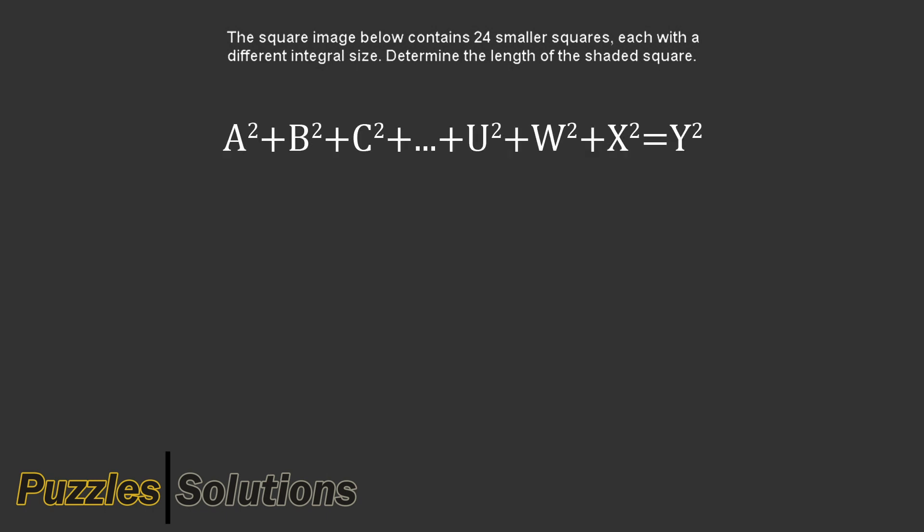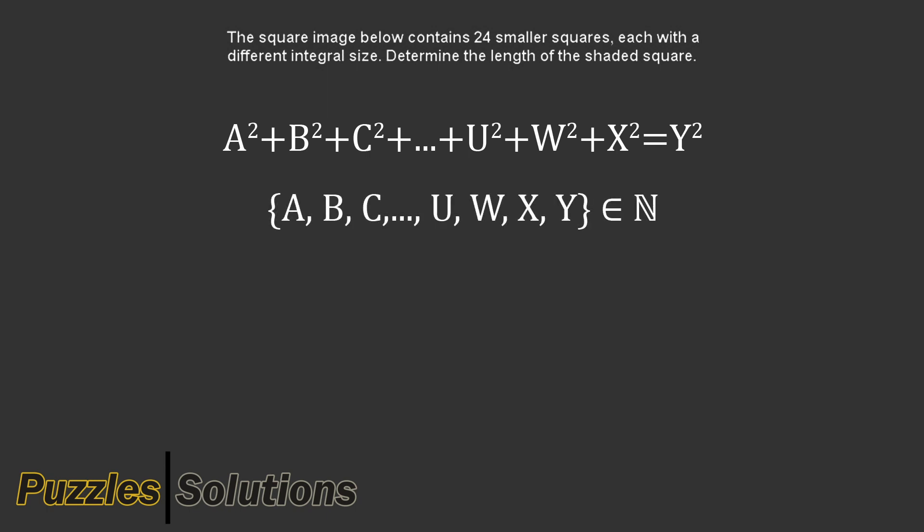The way I understand this problem is that we want to satisfy the equation a squared plus b squared plus c squared, and so on, all the way to x squared, and this sum has to be equal to y squared. Also, the side lengths of each square has to be integer sized.